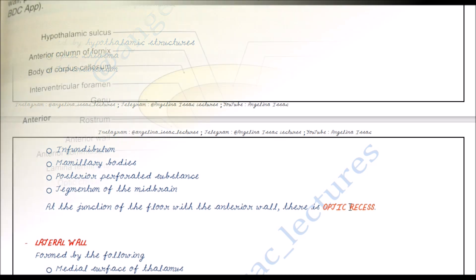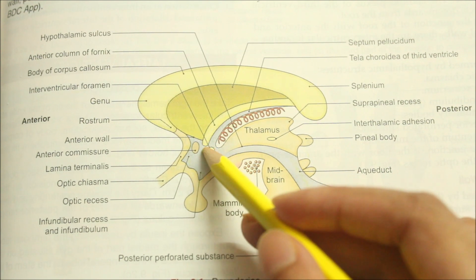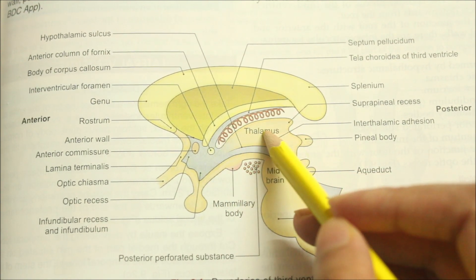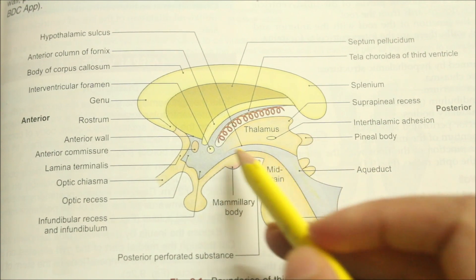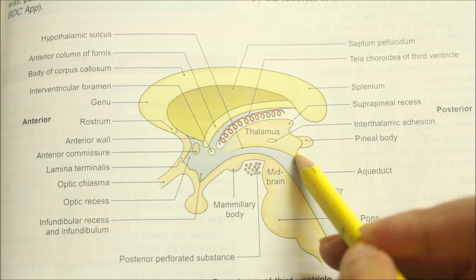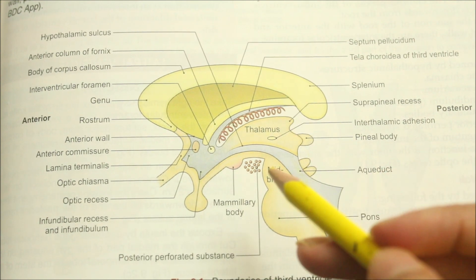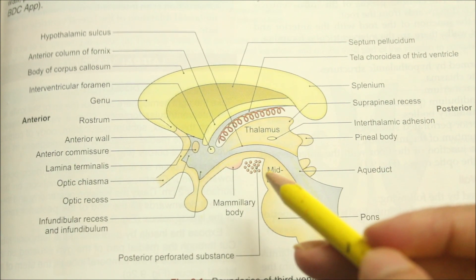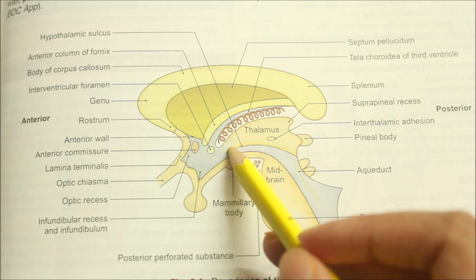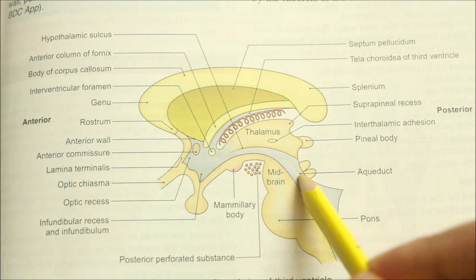Now looking at the lateral wall of the third ventricle, it is formed by the medial surface of the thalamus, the hypothalamus, and the hypothalamic sulcus, which separates the thalamus from the hypothalamus. This sulcus extends from the interventricular foramen to the cerebral aqueduct.